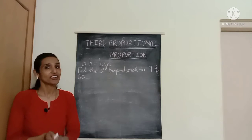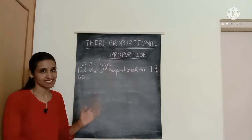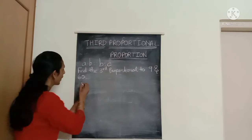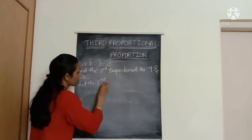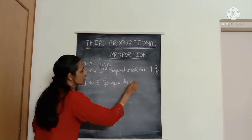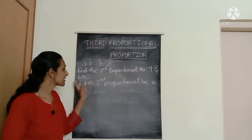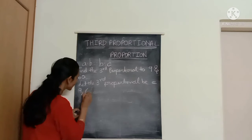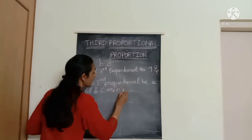Now let's see a question on third proportional: find the third proportional to 9 and 60. You are given only two terms and have to find the third proportional. Let the third proportional be C. That means 9, 60 and C are in proportion.